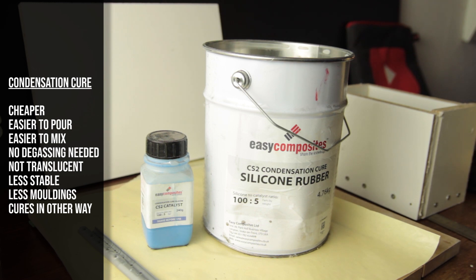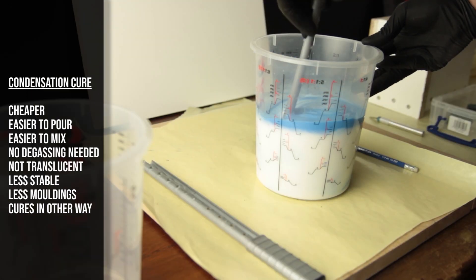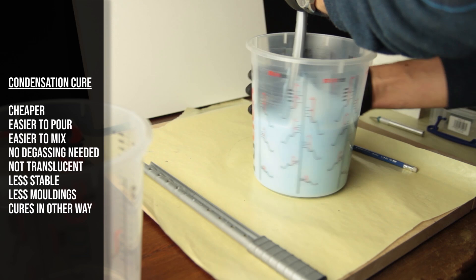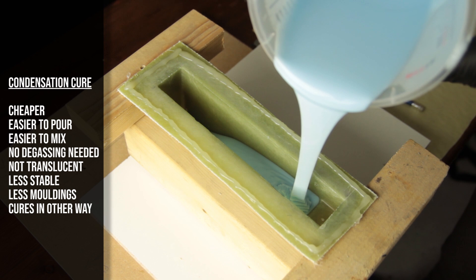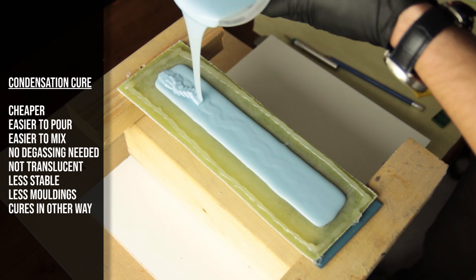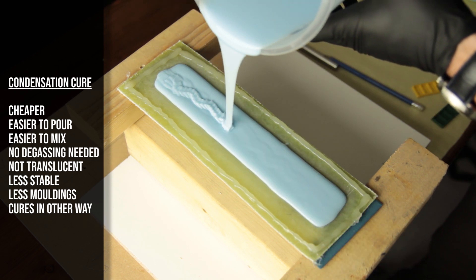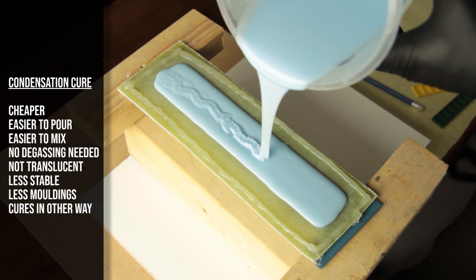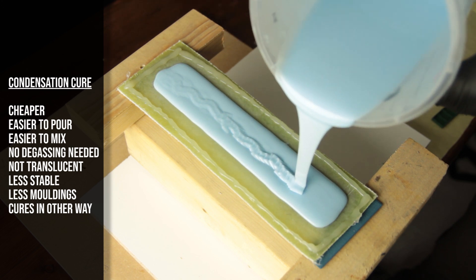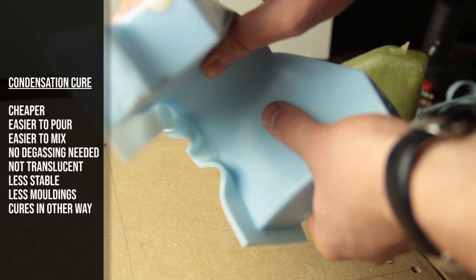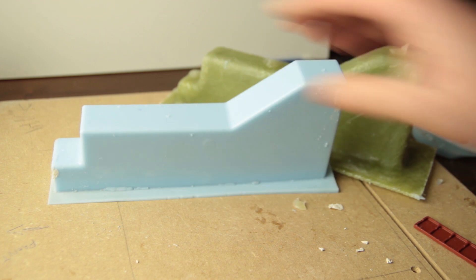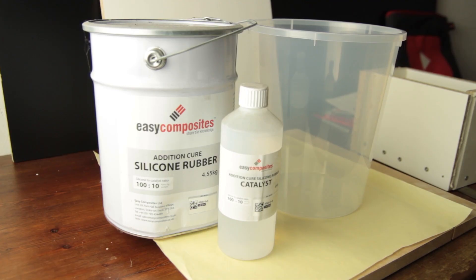The downsides is that it's not translucent. It's a bit less stable. More prone to shrinkage or differences. And it won't last that long. So it will change shape over time and in theory gets less moldings. But every silicon has its purpose. This will be featured later on in other tutorials as well.